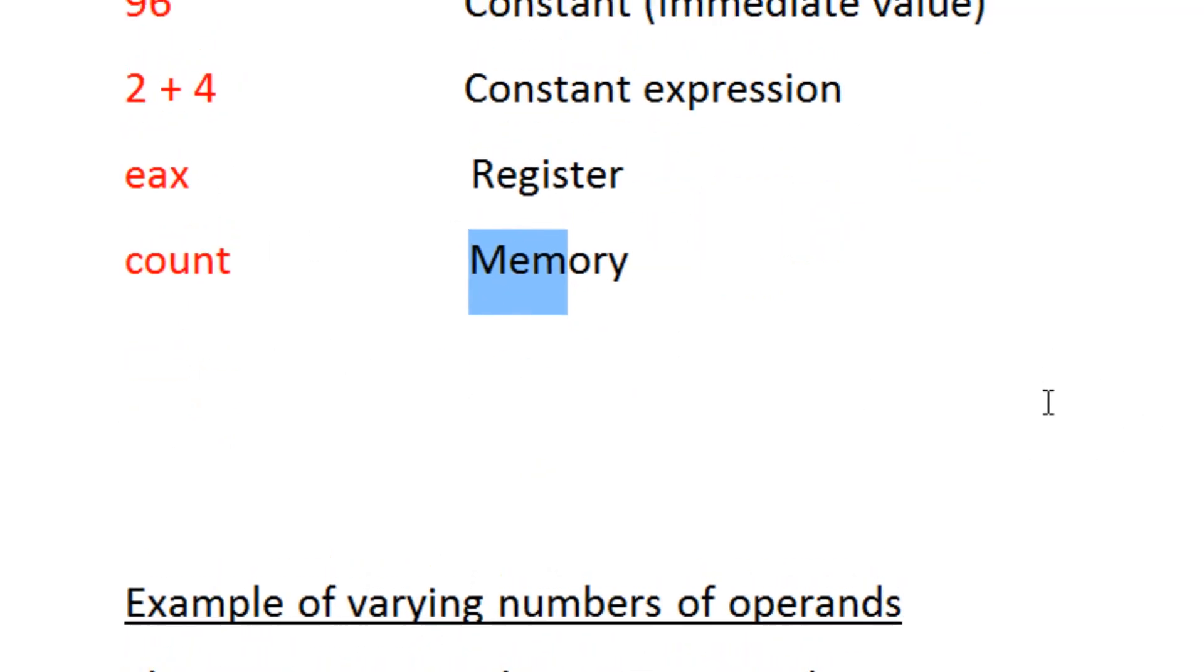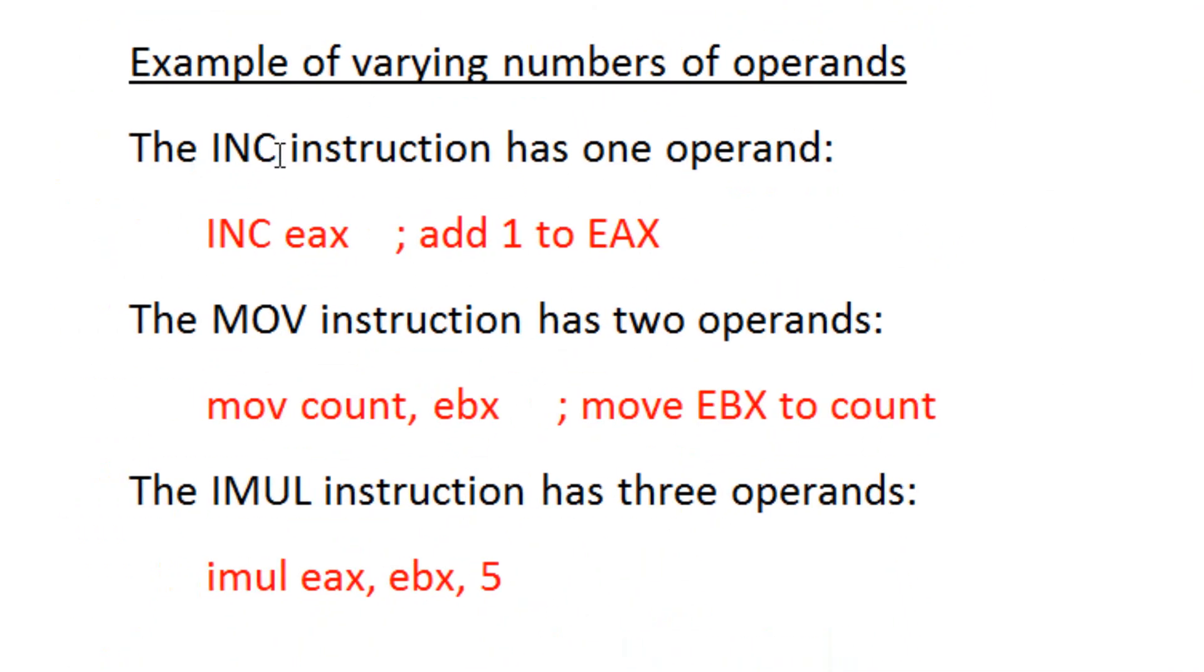Now here are some examples of varying numbers of operands. The INC instruction has 1 operand here as you can see. INC EAX adds 1 to EAX. So this has 1 operand.